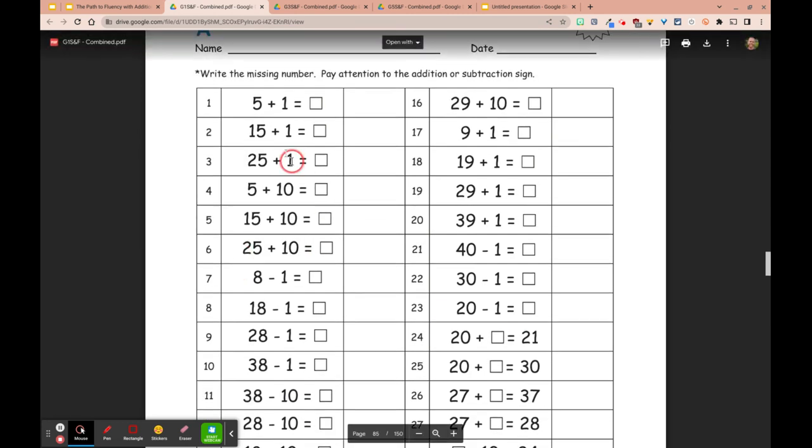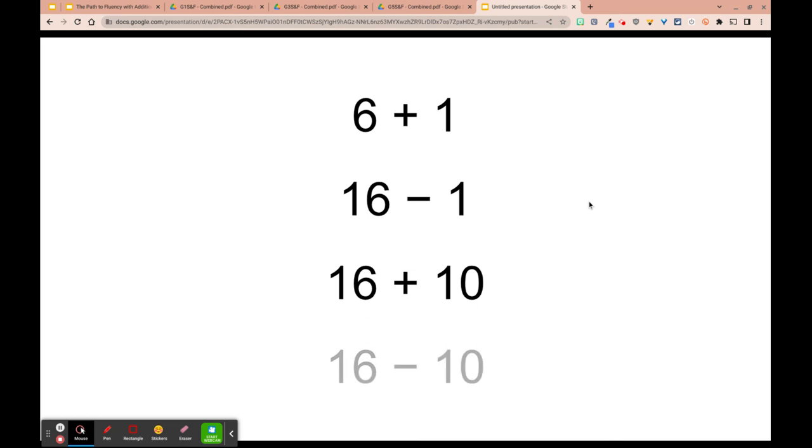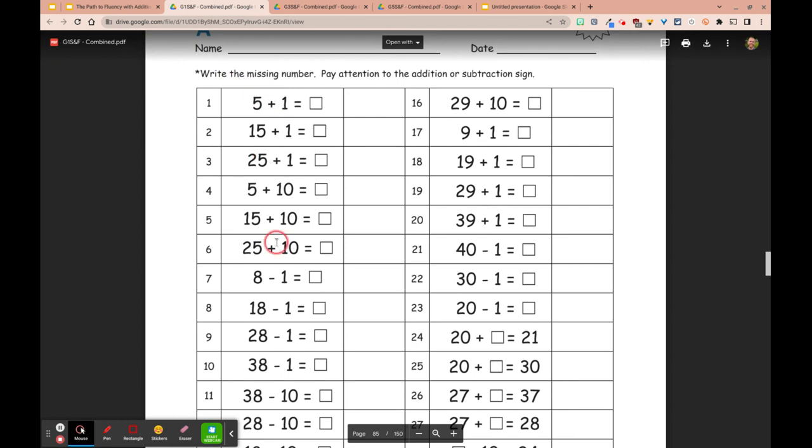My number talk might look something like this, and these number talks are supposed to be quick, three to four minutes, and that's it. I might post six plus one and just ask kids to think about this and then share out a strategy, give them some independent think time first. And then write those different strategies they mentioned on the side. Then I'll ask 16 minus one, write down the strategies they share, 16 plus 10, and then 16 minus 10. And hopefully that puts kids in a better position to apply different strategies to these problems as they work through them.